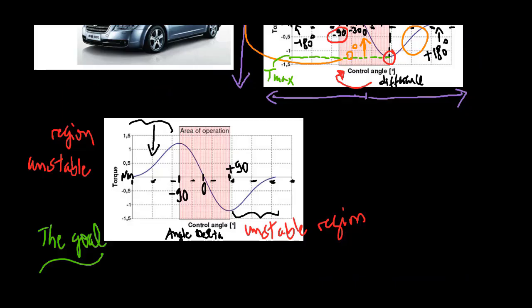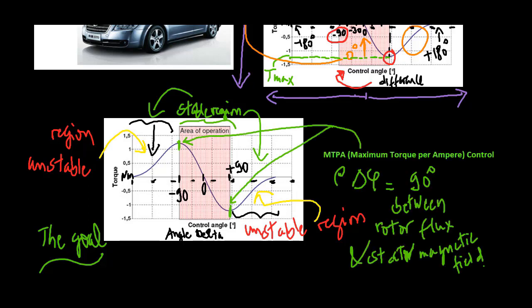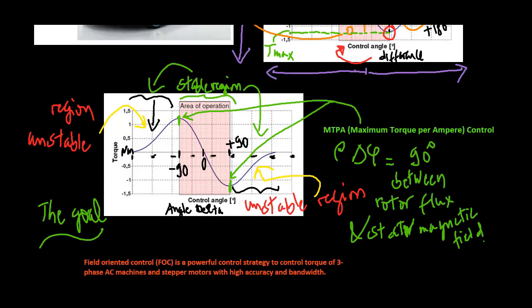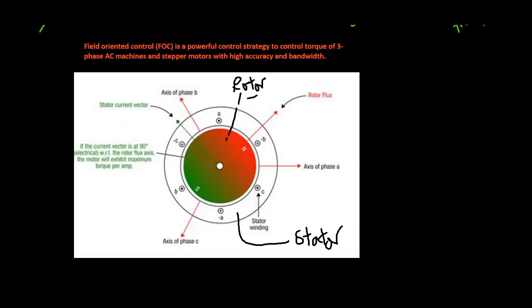The goal is obviously to not let the motor get over the stable region, because this part of the region is unstable. At the top of that curve is where we get maximum torque per ampere, and that's what field oriented control is going to allow us to do — and to allow us to do it in a stable way, so that we don't have to worry about coming out of the stable region.